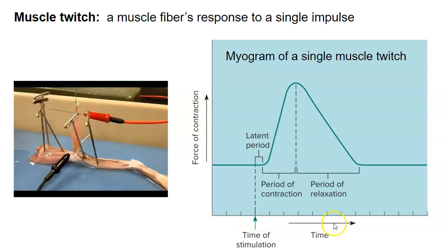So in this myogram, we have a single muscle twitch — a single muscle fiber responding to a stimulation. This is the time of stimulation right here, this green arrow, and time proceeds in this direction. We have the force or the strength or the tension of the contraction on the axis. After the stimulation, we have this latent period — the time between the stimulation and before the muscle starts to contract. In humans, that's about two milliseconds, or two thousandths of a second.